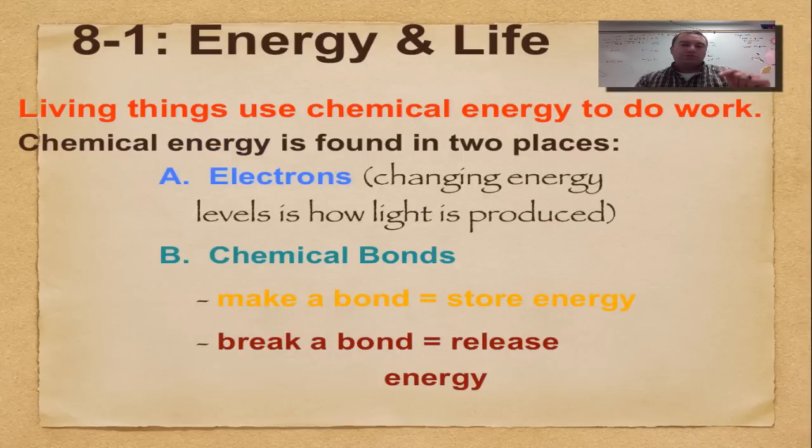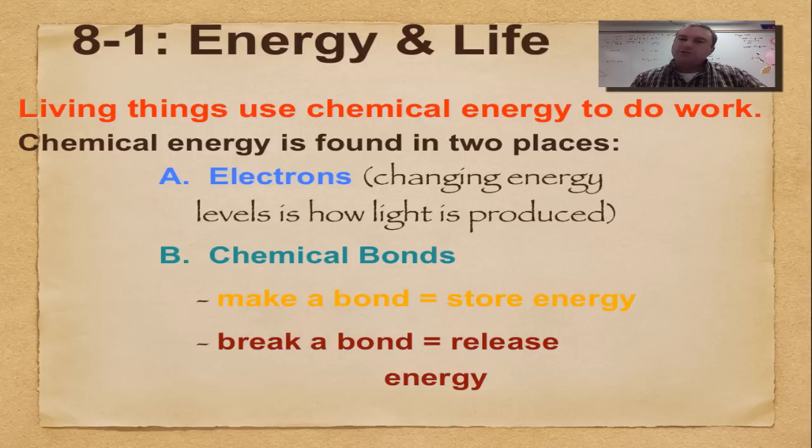Living things must use chemical energy to do work. There's things like kinetic energy, chemical energy, potential energy. Living things use the chemical form because everything that happens in your body happens because of chemistry. We learned that in chapter two when we studied chemistry. If you're new to my series of screencasts, hit the chapter two playlist. You'll learn all about the chemistry of life, the biochemistry.